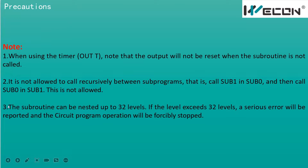The third point: subroutines can be nested up to 32 levels. This means we can call sub1 inside sub0, call sub2 inside sub1, and so on, up to a maximum of 32 levels. If the nesting level exceeds 32, the PLC will also report an error.